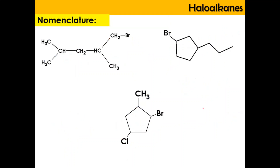Now we will do the nomenclature for haloalkanes, using the same principles as naming alkanes. We identify the longest carbon chain, which in this example has five carbons, giving us pentane. We number from the end closest to the bromine substituent, so numbering gives carbon 1 at that end.